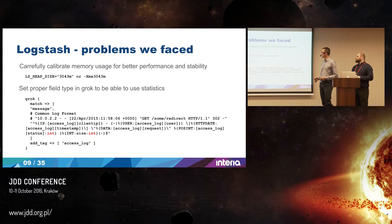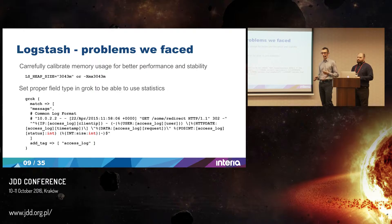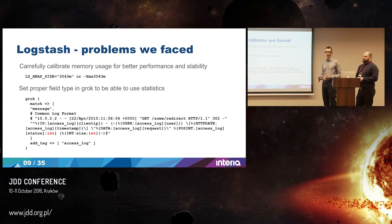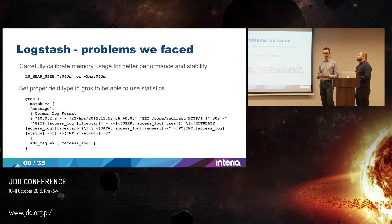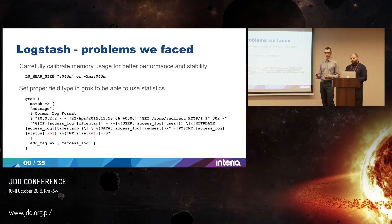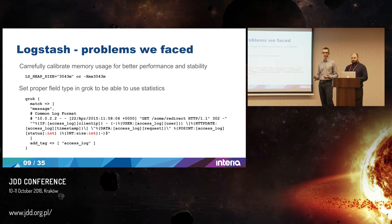Another thing is memory. Logstash by default starts with about one gigabyte of memory for the Java heap stack, which is in most cases enough to run. But when we added more and more filters, we had to extend it. Without proper configuration, it was just behaving strangely — for example, Logstash could close some plugins and not send logs to the output, or it could accidentally crash and not restart. So we have to add enough memory to process more data.